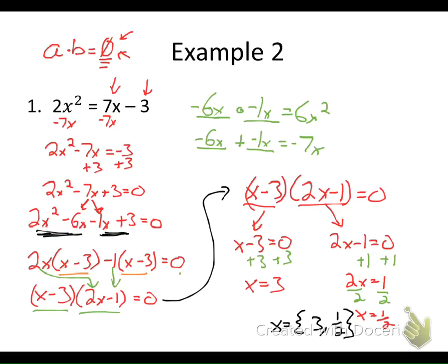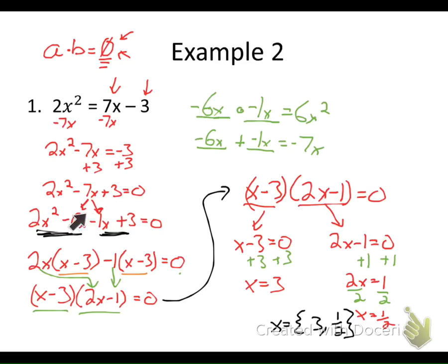Just a quick reminder of what we learned: if something times something is zero, then either the first number is zero or the second number is zero. We can use this fact to solve quadratics. If they give you something not equal to zero, move everything to one side so it equals zero. Once it's equal to zero, factor it using whatever strategy you want. When you've got it written as a factor times a factor equals zero, set each factor equal to zero and solve — that gives you your two solutions.